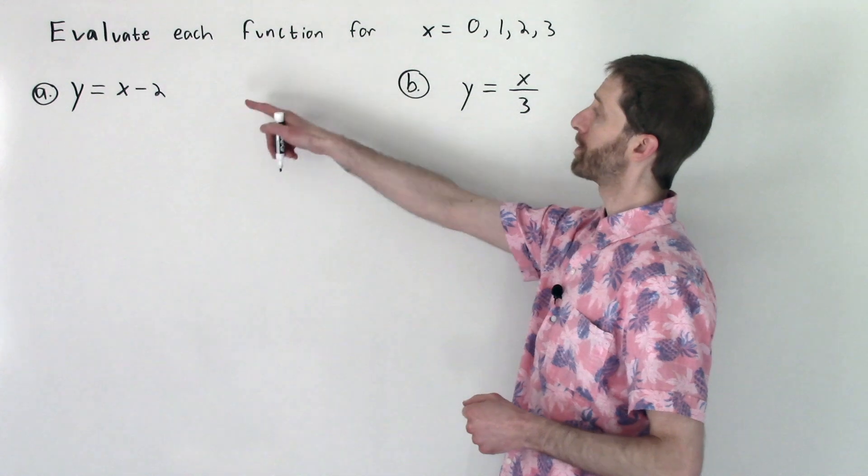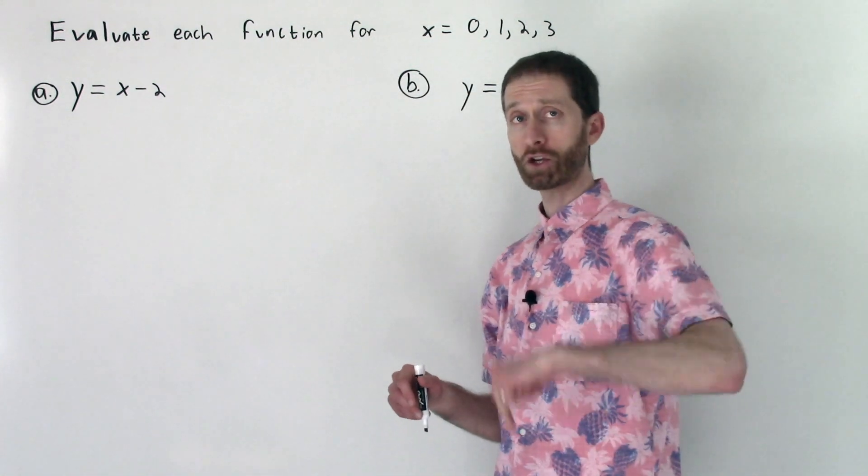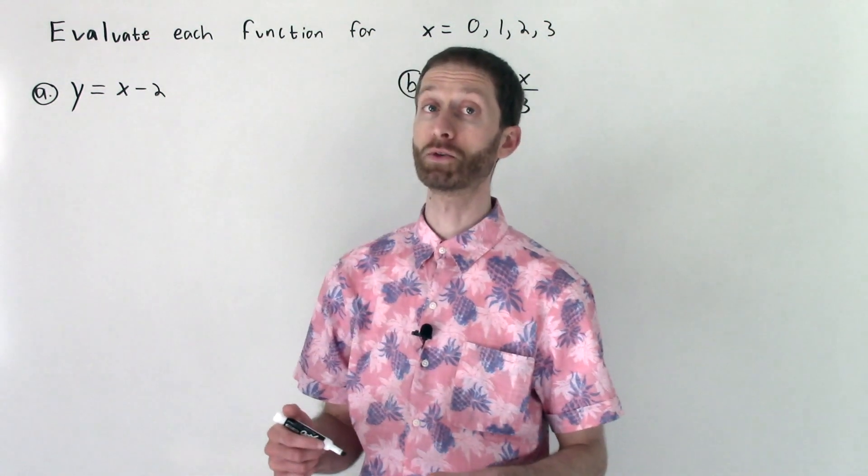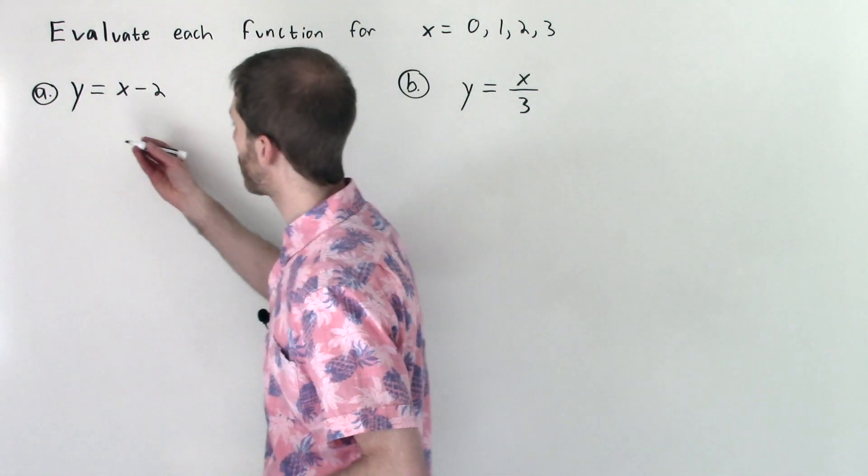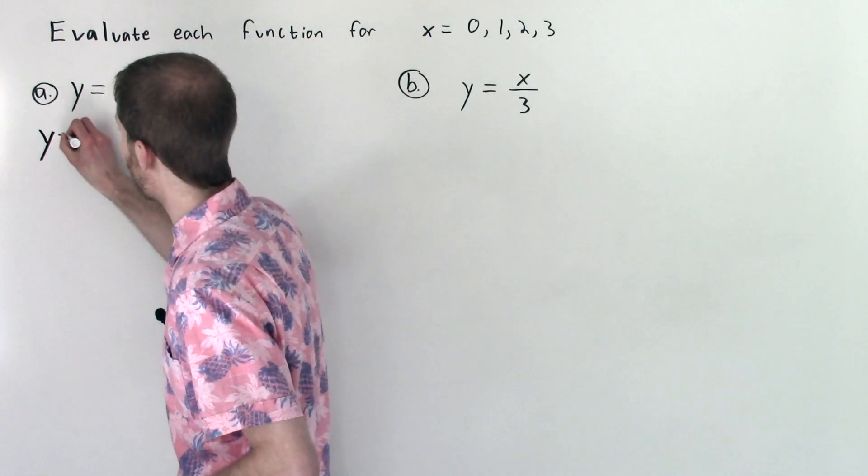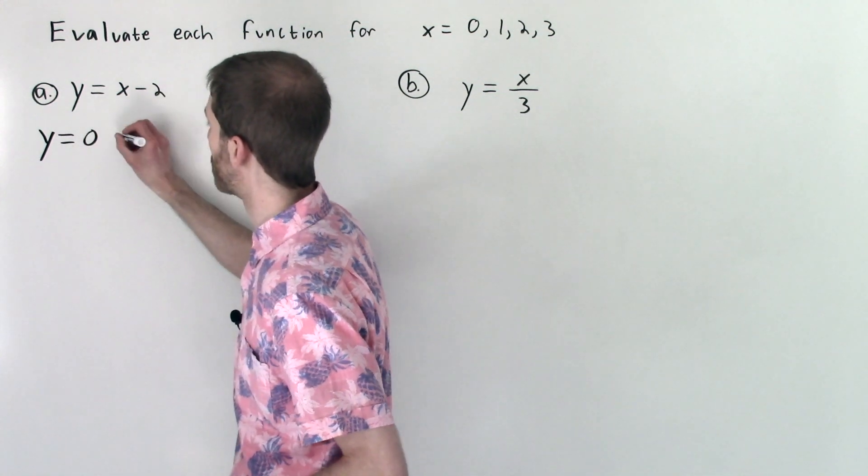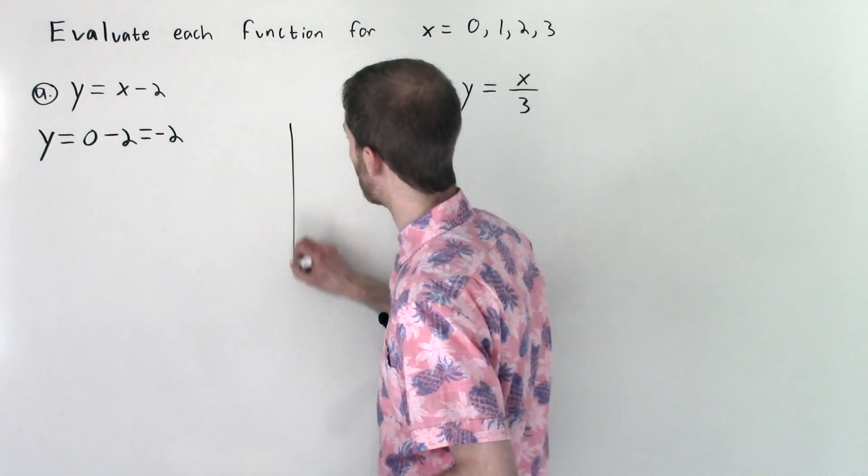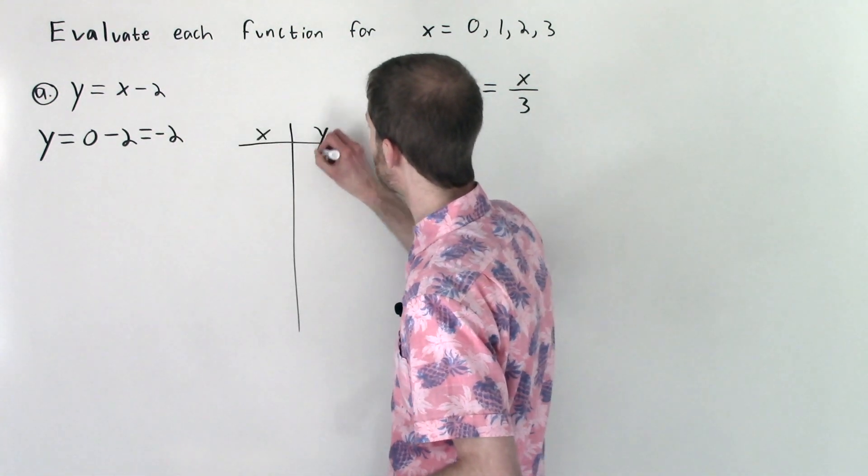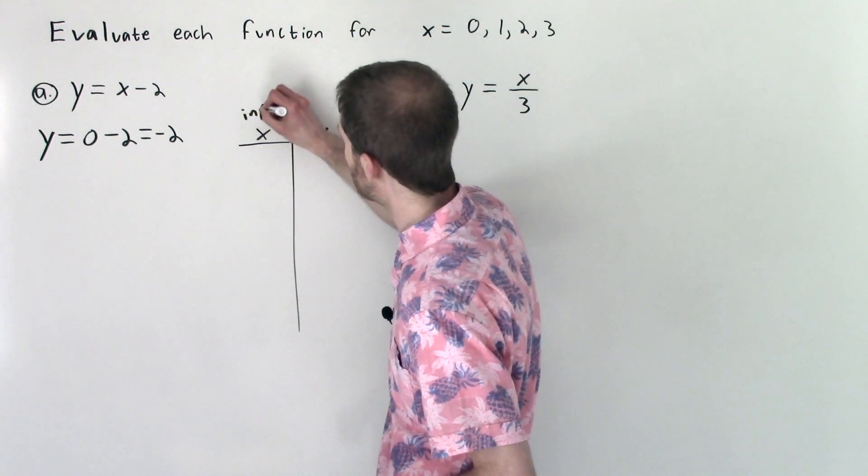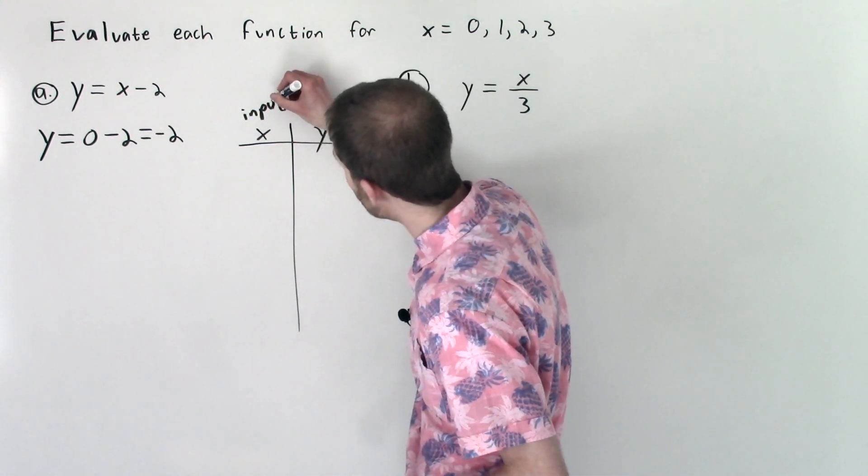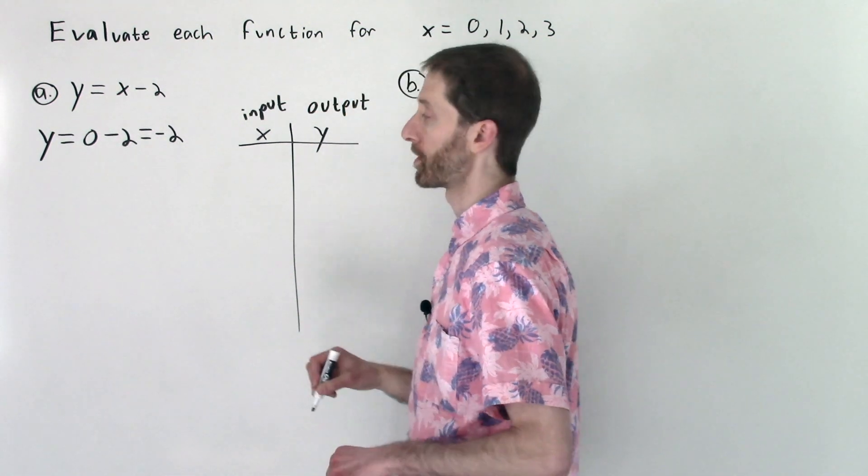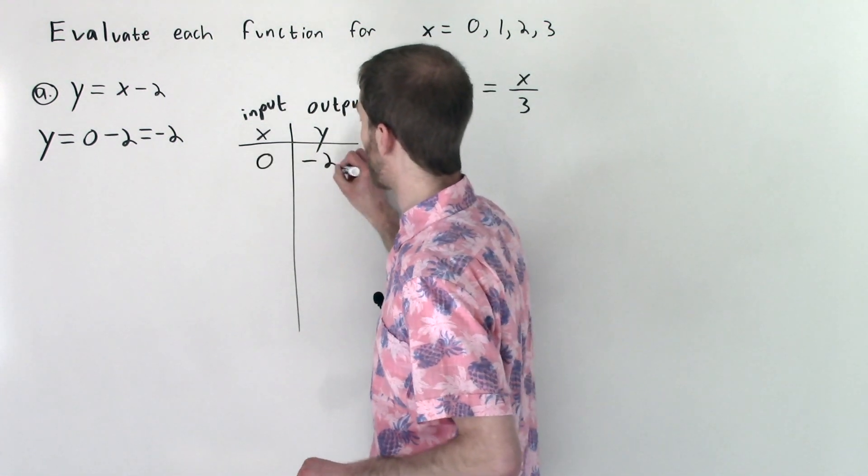We are going to continue to evaluate functions for values that are given to us. So we're going to evaluate each function for 0, 1, 2, and 3. As I showed to you earlier in the video, I'm going to first do the work and then put everything nice and organized into a table. So we're going to start out with x equals 0, and we're going to input that in for x. So that would be 0 gets input for x minus 2 is negative 2. And so as the table goes, I've got my x values again, or my inputs. This is input and this is output. y is our output, our result. So I've got an input of 0 and an output of negative 2.